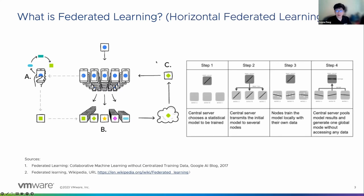This method is not complex. In Wikipedia, it is described in four steps. First, from the central server, choose a model, then send the model to clients as the initial model. Each client trains its model with local data on the client side. After several rounds, each client gets a trained model and then sends it back to the central server for averaging. Then we repeat steps two to four until we get a verified global model.